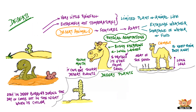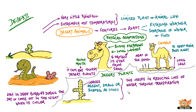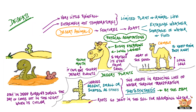Desert plants too are specially adapted to the extreme desert conditions. The leaves in desert plants like cactus are either absent, very small, or shaped as spines. This helps in reducing loss of water from the leaves through transpiration. The process of photosynthesis in these plants is carried out by the stems. Their roots also go deep into the soil for absorbing water.